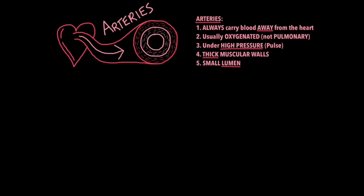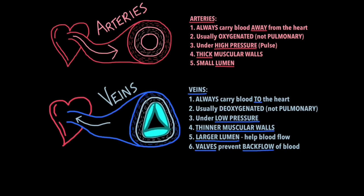Veins on the other hand always carry blood to the heart. Remember arteries A for away from the heart and veins to the heart. They usually transport deoxygenated blood except for the pulmonary vein which transports blood from the lungs back to the heart. Blood is transported under low pressure in veins and therefore they have thinner muscular walls because they don't need to withstand high pressures. They also have a large lumen to allow more blood through to help blood flow. But because of the low pressure they have valves to prevent backflow of blood. That's what these flaps are here. They're valves but looking from above. So they get smaller and bigger as blood goes through. So as blood travels through the valves shut behind it to prevent backflow of blood.